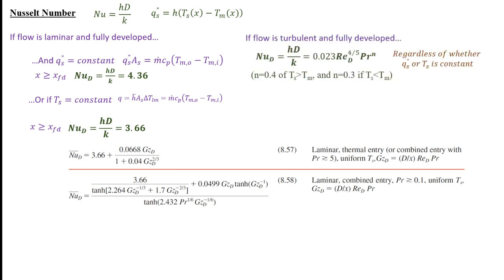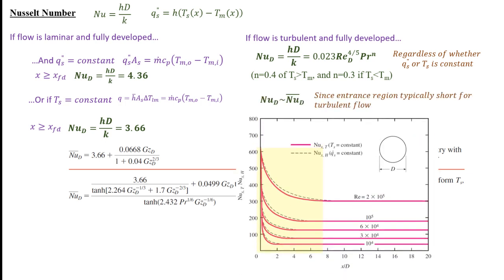If the flow is turbulent, the Nusselt number is given by the Dittus-Boelter equation. This is valid regardless of the boundary condition and is a simple equation for the Nusselt number. However, if the temperature difference gets large, this equation can have around a 40% error. There are other empirical correlations that are more accurate but more complex; in this class we'll stick with this equation. That gives us the local Nusselt number in the fully developed region for turbulent flow. Because the entrance region in turbulent flow is small, we assume the flow is fully developed past 10 diameters and can approximate the local Nusselt number as the average Nusselt number over the entire pipe.